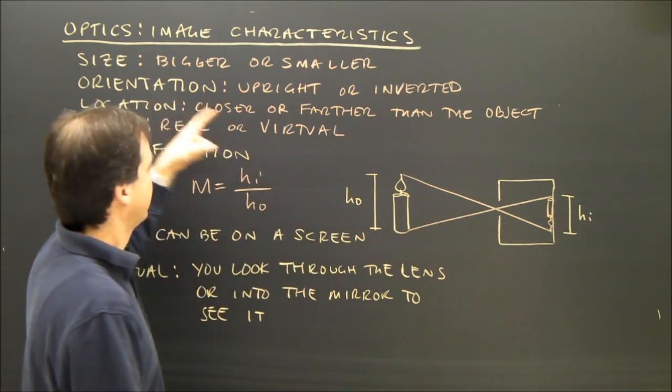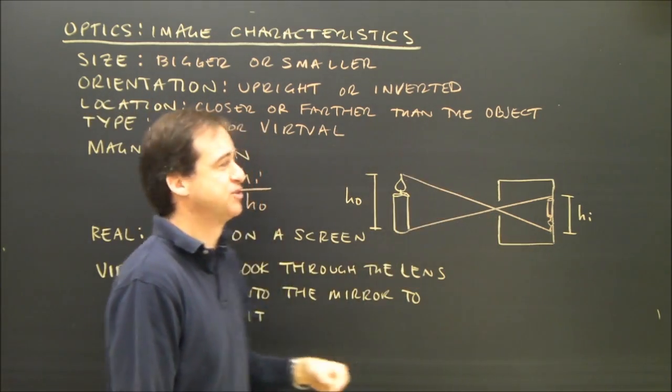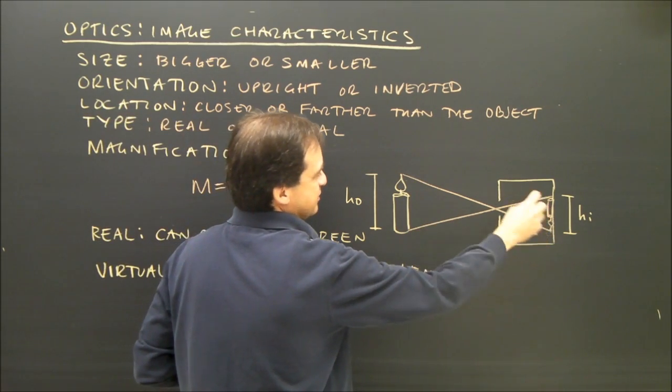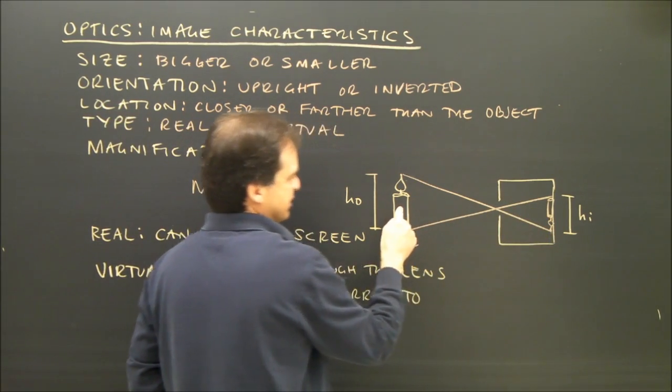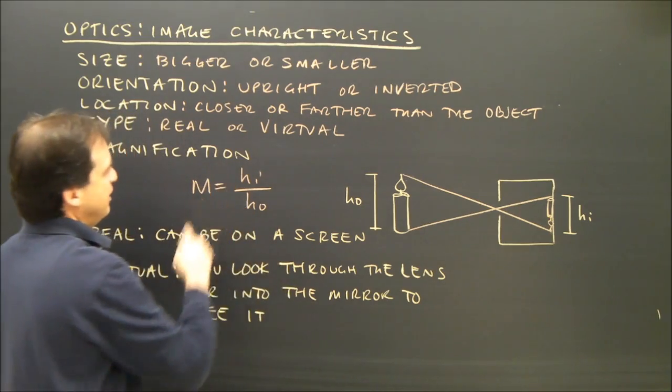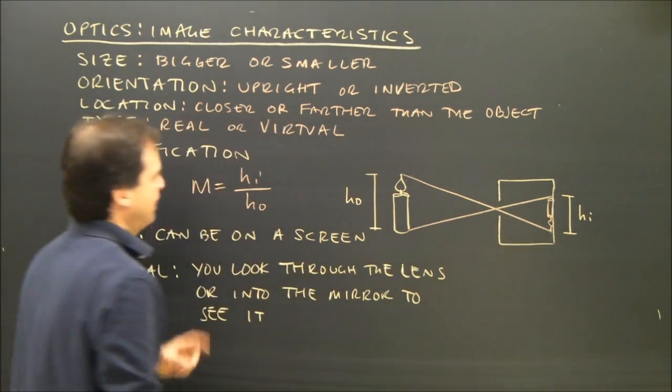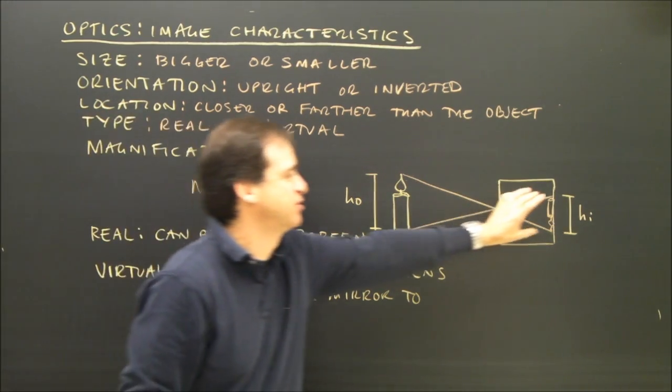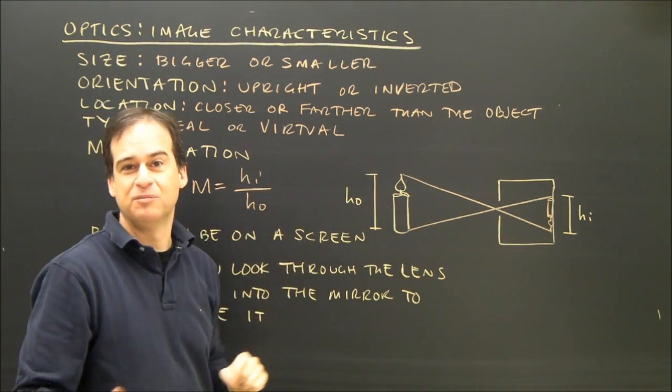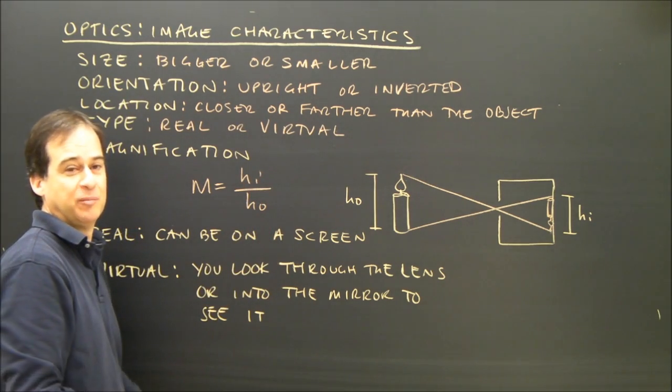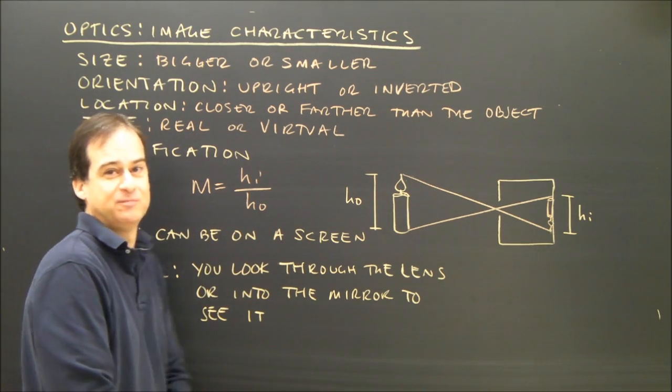So this image here is size, smaller, orientation, upside down. So it's inverted location. It's on the opposite side of the lens, and it's closer to the lens than the object. It's virtual, real, because it's on a screen, and the magnification is going to be less than one. I can calculate it by measuring this and measuring that. It doesn't matter what the units are, because this formula, the units cancel out. It's just a number. It's a ratio.